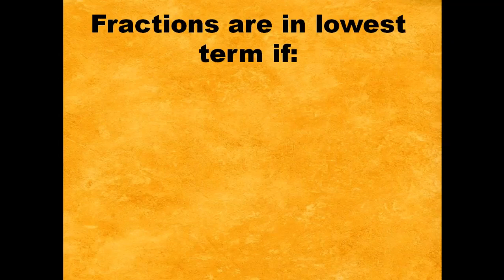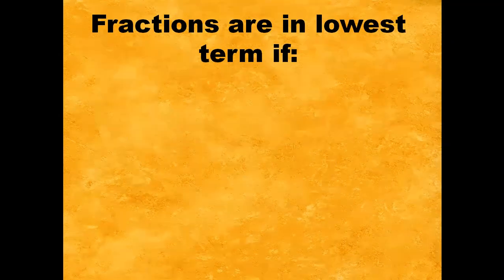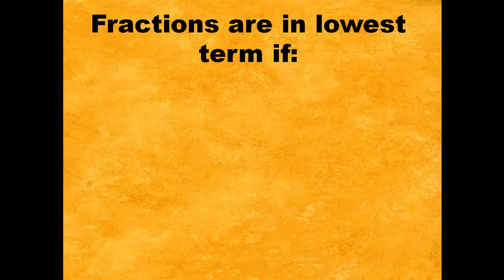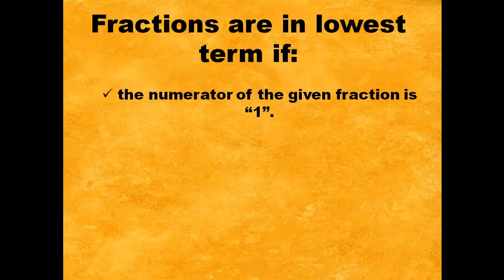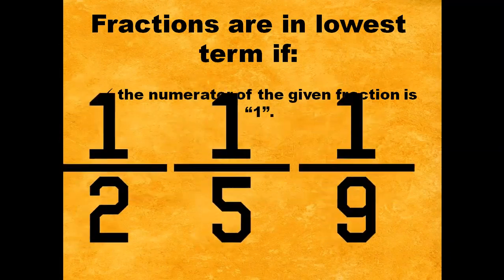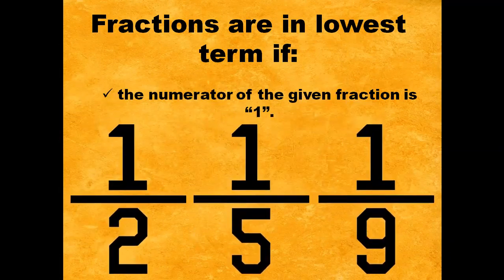How will you know if the given fraction is in lowest term? Fractions are in lowest term if the numerator of the given fraction is one. For example, one-half, one-fifth, one-ninth. The numerator of these fractions is one, which means they are in lowest term.